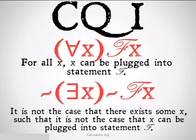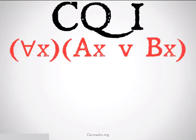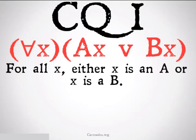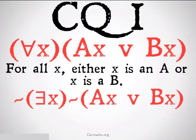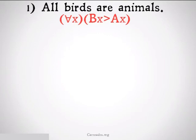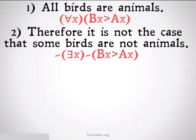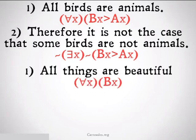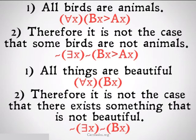To look at an example: for all x, x is A or x is B — basically, any x has to be either A or B. Therefore, it's not the case that there exists some x that is not A or B. More concretely: all birds are animals, therefore it is not the case that some birds are not animals. All things are beautiful, therefore it is not the case that there exists something that is not beautiful.